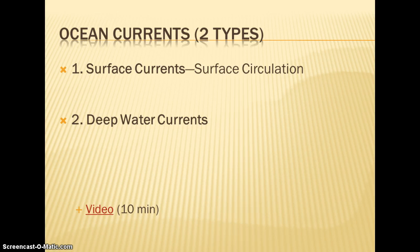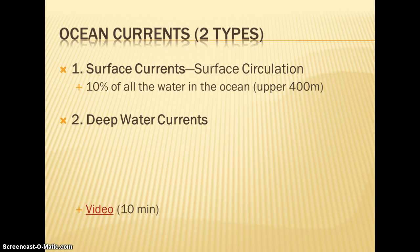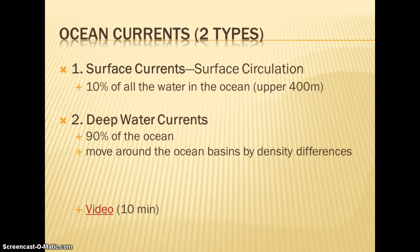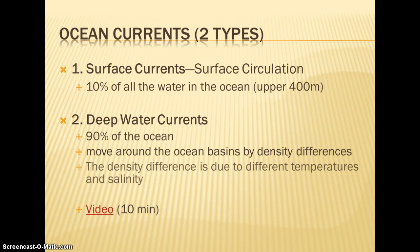Of our two types of currents, we have surface currents — just the upper portion of the water, about the top 10 percent — and deep water currents, which make up the majority of ocean water. The reason surface currents are only the top 10 percent is that sunlight can only penetrate down 300 to 400 meters. Once you get closer to the poles, you'll have pretty much the same temperature throughout. Deep water currents are driven by density differences of the water, which can relate to temperature, salinity, and amount of evaporation.